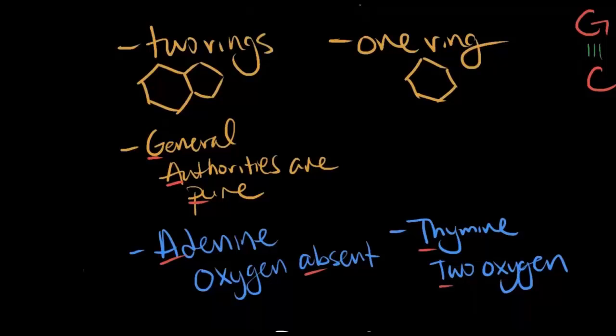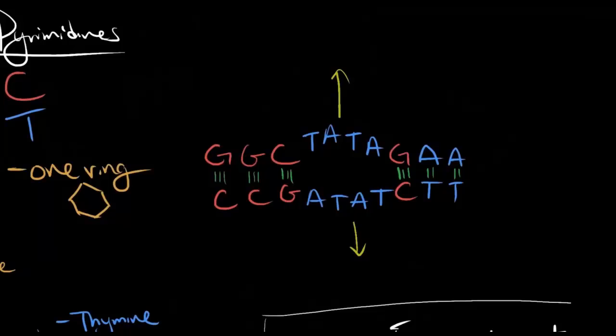Also know that G's base pair with C's and do so with three hydrogen bonds. A's base pair with T's and U's with two hydrogen bonds. On adenines, oxygen is absent. If it only has one ring, it's a C or T. Thymines have two oxygens. Because T's and A's are held together by two hydrogen bonds, it's easier to open DNA in areas that are T and A rich, like a TATA box.